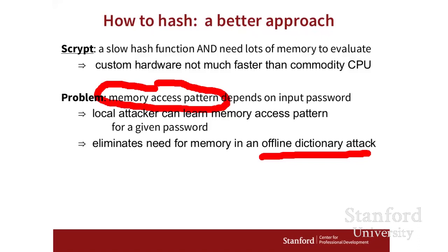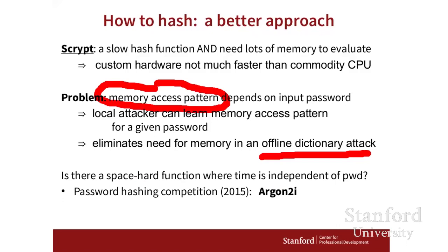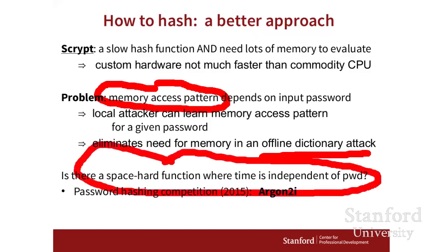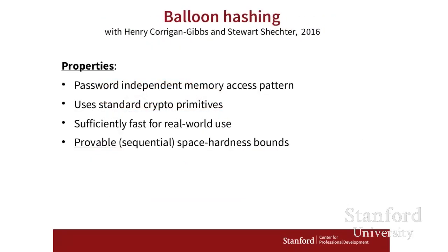There's been progress on this recently. The question we're asking is: is there a space-hard function where the time to evaluate the hash function is independent of the password? And the answer is yes — there actually is such a thing. The hash function is called Argon2. It was announced as the winner of the password hashing competition that concluded recently. The nice thing about Argon2 is it's supposedly space-hard, and at the same time the memory access pattern is independent of the password. So the cache timing attack I just described would presumably be difficult to mount. The one issue with Argon2 is there's no rigorous security proof to argue that it really is space-hard as claimed.